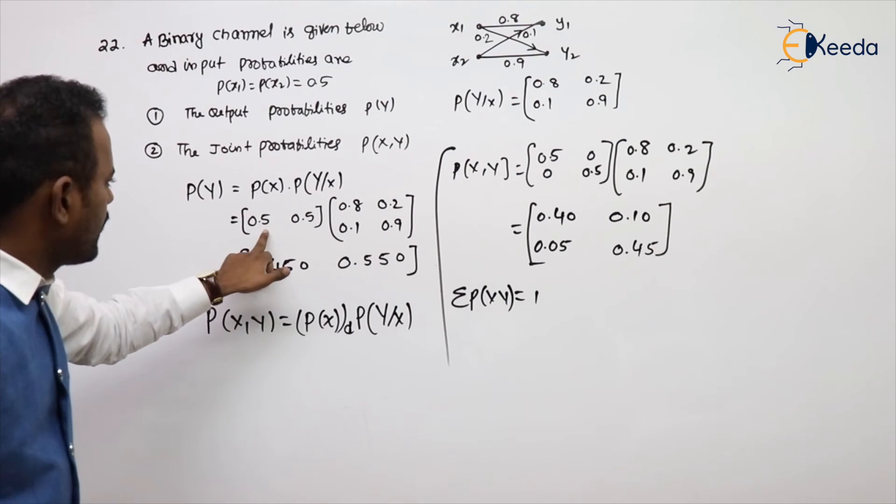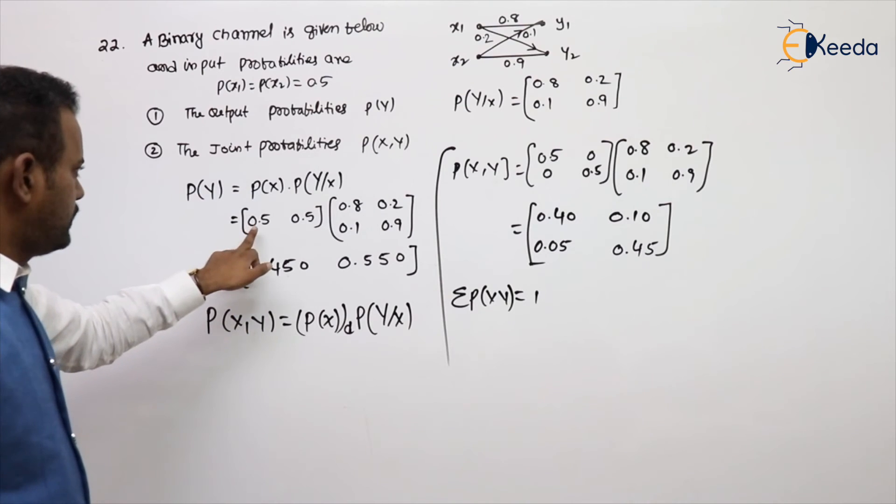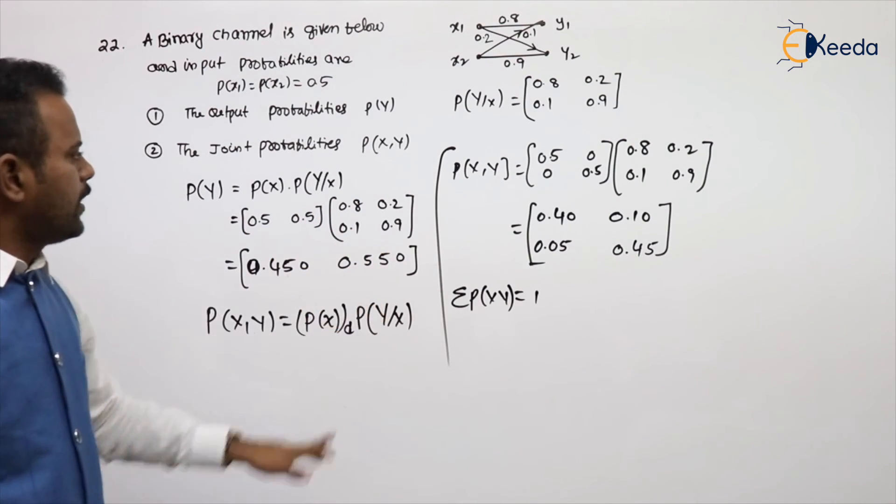This is correct only. 0.40, 0.05, so 0.45. This will be 0.10, 0.45, 0.55. So total you can add, it will become as a 1.